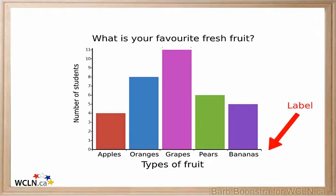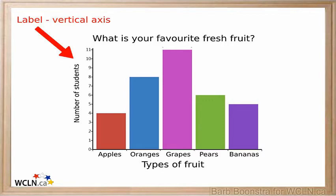Each bar is labeled to give the separate pieces of information that are being shown. The vertical axis is labeled to indicate what the numbers represent.